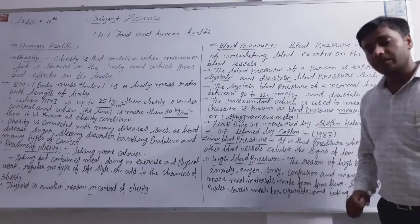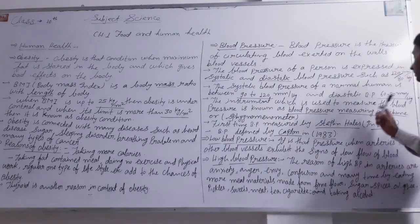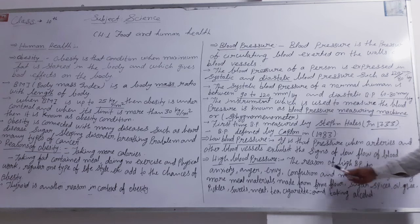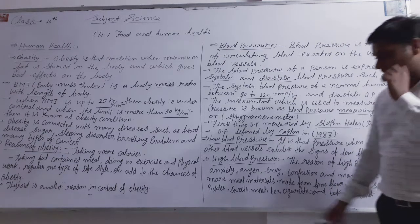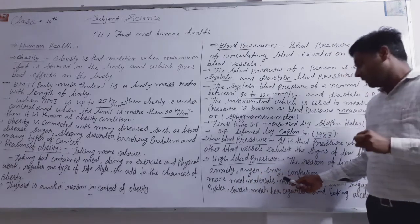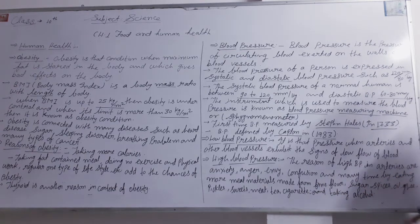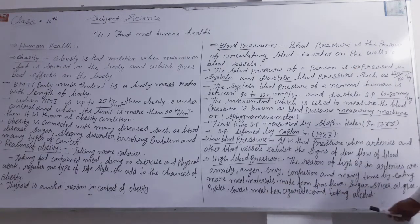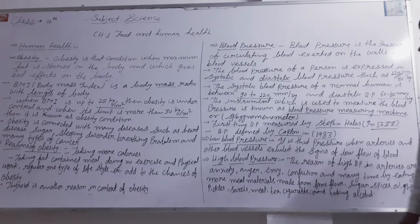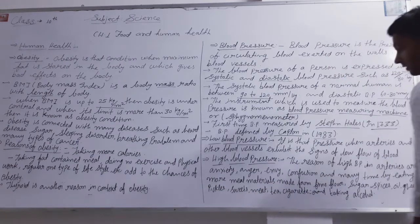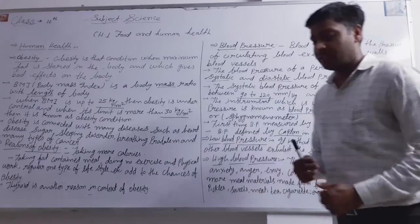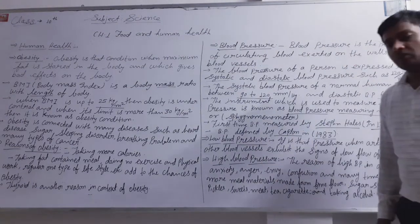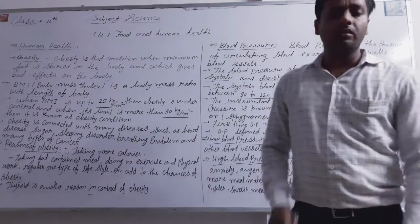High blood pressure occurs when blood generates too much pressure on the vessel walls. High blood pressure causes include anxiety, anger, stress, and eating certain foods like fine flour, sugar, oil, ghee, pickles, sweets, tea, cigarettes, and alcohol. These can lead to high blood pressure.